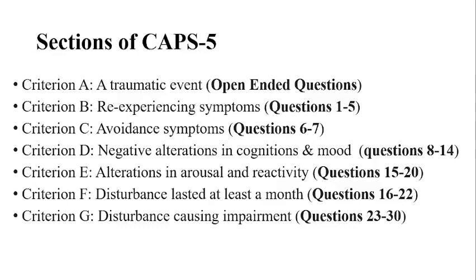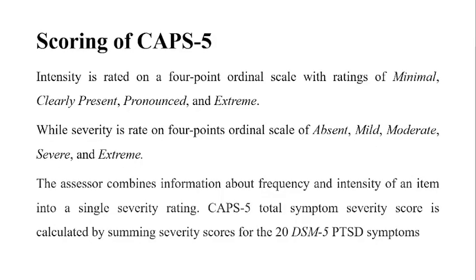Criterion A covers details about the traumatic event. Criterion B covers items 1 to 5, Criterion C covers items 6 to 7, Criterion D covers items 8 to 14, Criterion E covers items 15 to 20, Criterion F covers items 16 to 22, and Criterion G covers items 23 to 30.